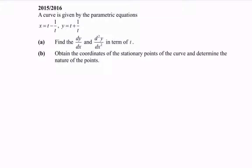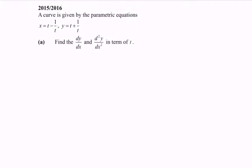In here we have two parts. Kindly focus on Part A. Given the situation, x is equal to t minus t to the power of negative 1, y is equal to t plus t to the power of negative 1.